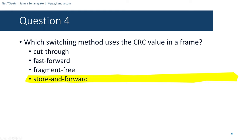Question number thirty-one: What OSI physical layer term describes the capacity at which a medium can carry data? Options are bandwidth, IEEE, IEIA, and TIA. Three of the answers are standards organizations — the answer that stands apart is bandwidth. Bandwidth is the capacity at which the medium can carry data.